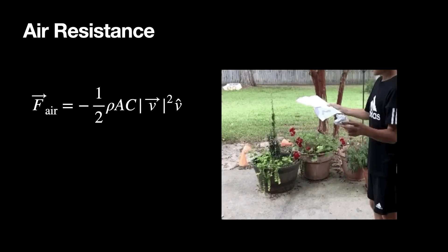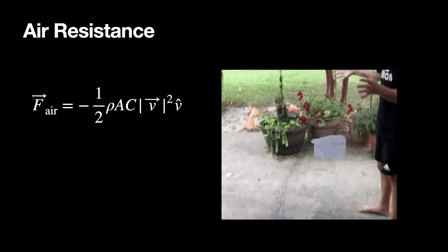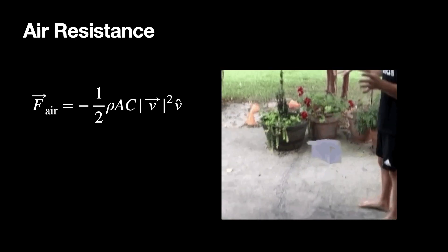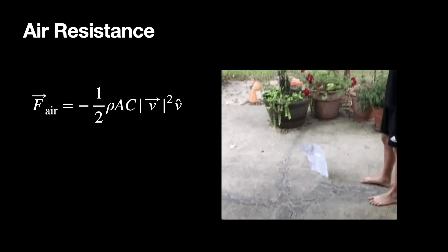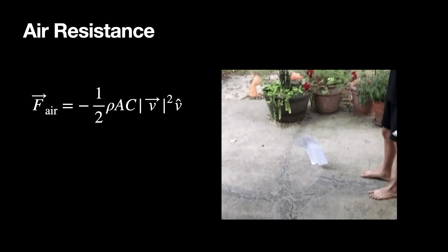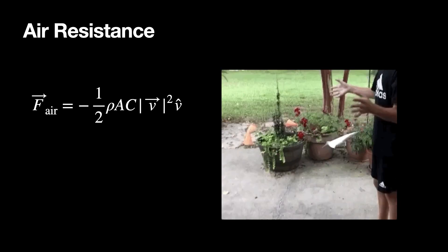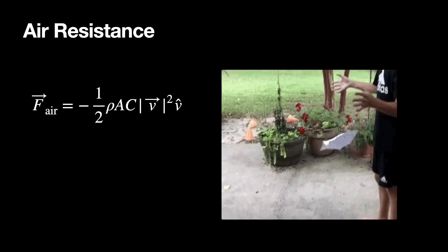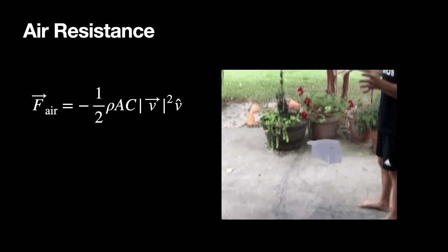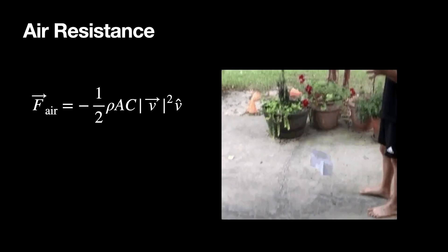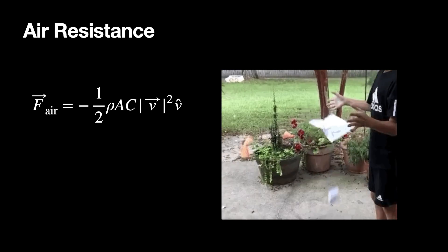Here is air resistance. When you drop something, the air pushes on it with a force proportional to velocity squared in this model. In the expression, rho is the density of the air, A is the cross-sectional area of the object, C is the drag coefficient depending on shape, V is velocity, and V-hat is the unit vector for velocity — because once you take the magnitude and square it, you don't have a vector anymore.